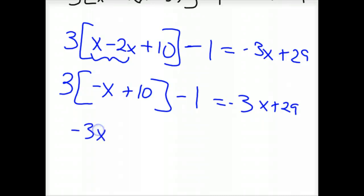So then you'd have -3x + 30 - 1, because you only distribute the 3 through the brackets, equals -3x + 29.